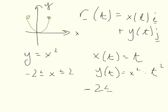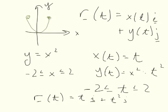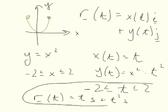and negative 2 is less than or equal to t is less than or equal to 2. So, our parameterization is that r of t is equal to t i plus t squared j for this set of t. That's our finished parameterization.